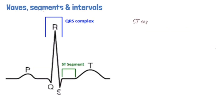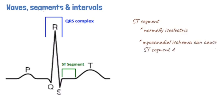The other major segment is the ST segment, which commences at the end of the S wave and hence at the beginning of the T wave. The ST segment is also isoelectric under normal circumstances. The most important causes of ST segment deviation are myocardial ischemia and infarction, with myocardial ischemia causing ST depression and myocardial infarction causing ST elevation.